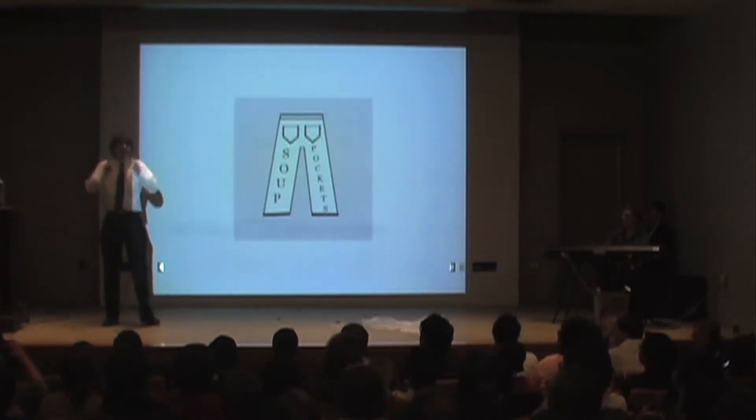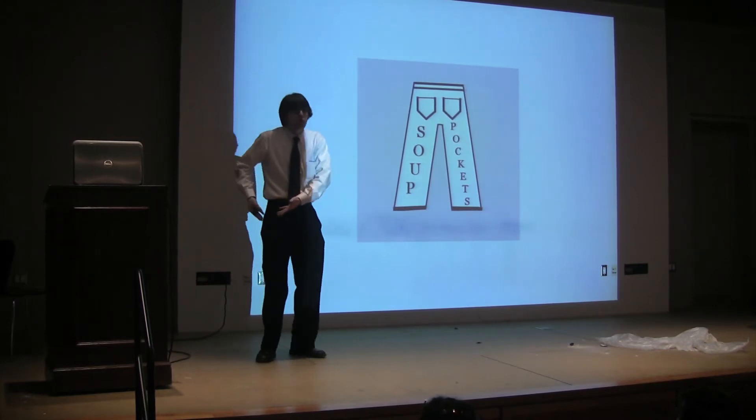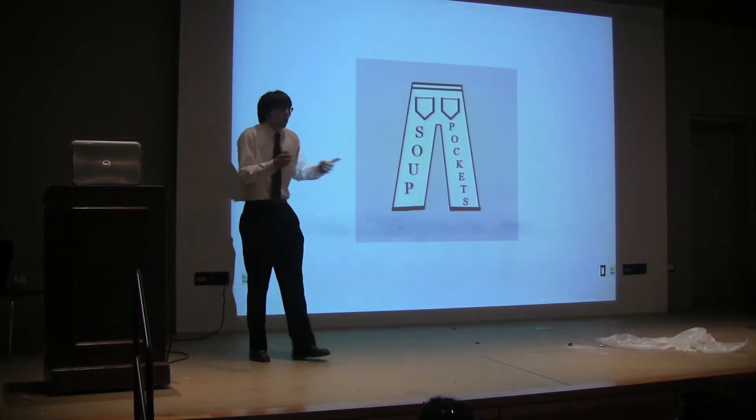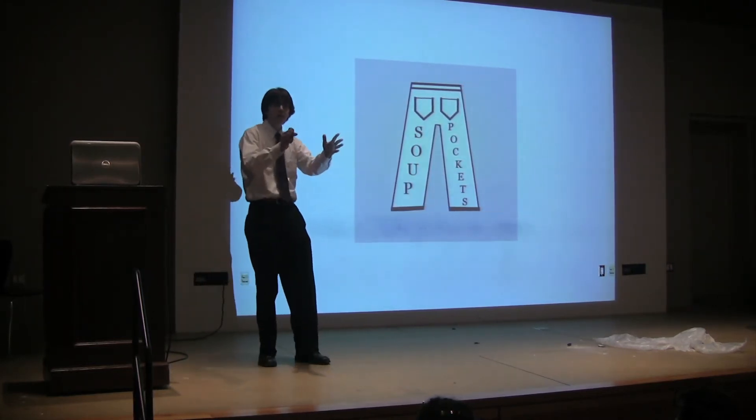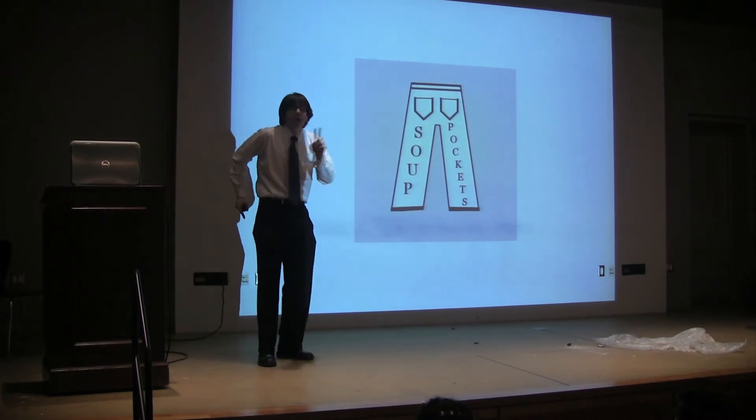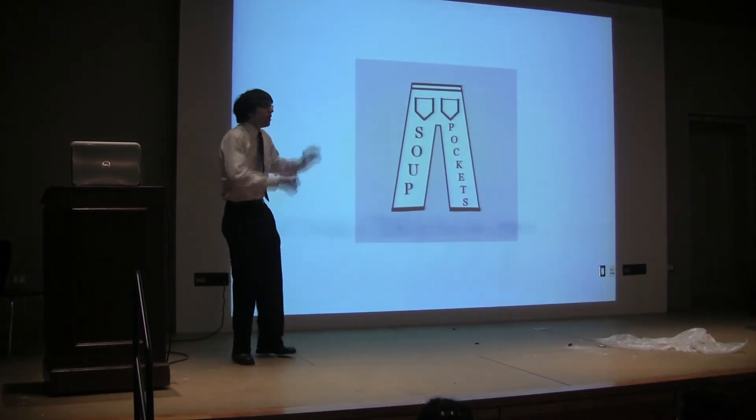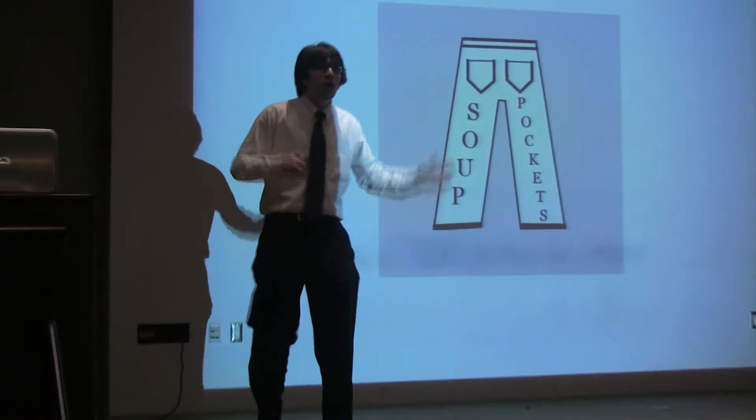You can put a different soup in each and every pocket. Maybe you want a Campbell on the left, chicken noodle on the right. Gotta have my variety. What's my back left pocket? Pasta Fagioli. What's my back right pocket? Wallet? No. Miso. Whatever soup you want, just go for it. Soup pockets.